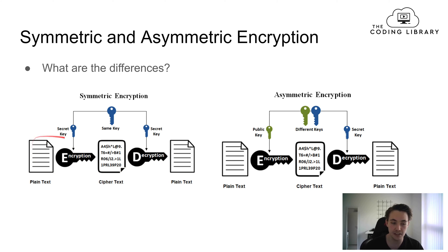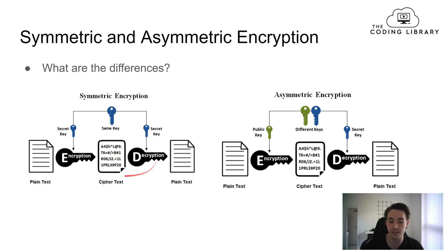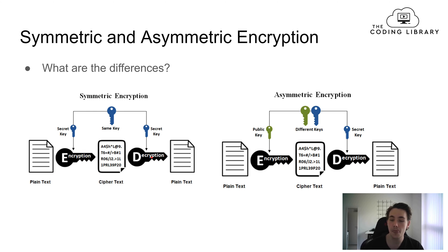So we have this plain text that we want to encrypt with a secret key, and then we have the cipher text which is the encrypted text. When we get to the receiver side, we can decrypt the cipher text again and get the plain text on the receiver end. In symmetric encryption we use the same key for both encryption and decryption.